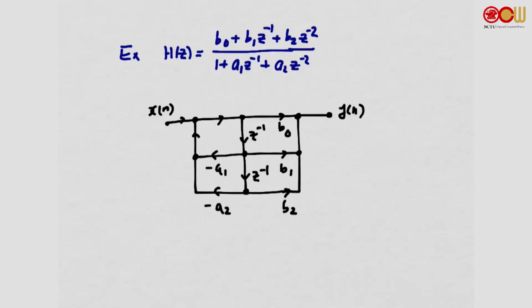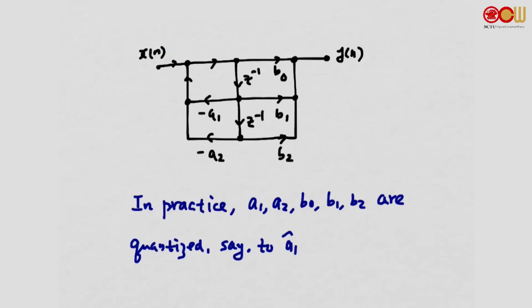For example, suppose we have a desired second-order system H(z). We have designed the coefficients a1, a2, b0, b1, b2. The direct form II implementation uses these coefficients, which we may have designed using a computer and stored in double format. But in practice, when we implement these coefficients a1, a2, b0, b1, b2, they will be quantized.